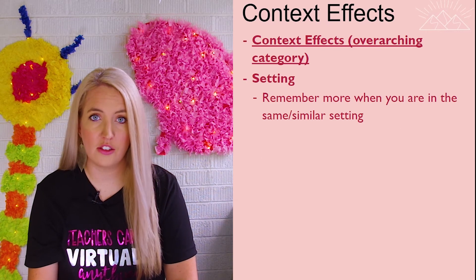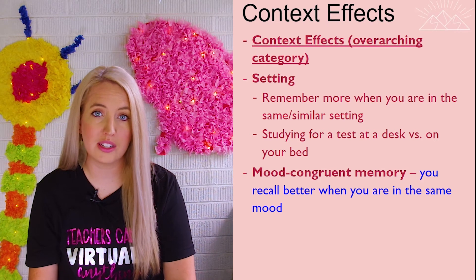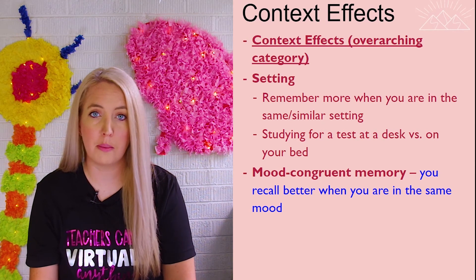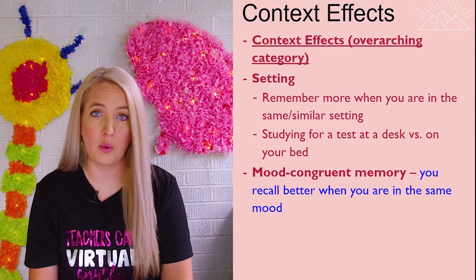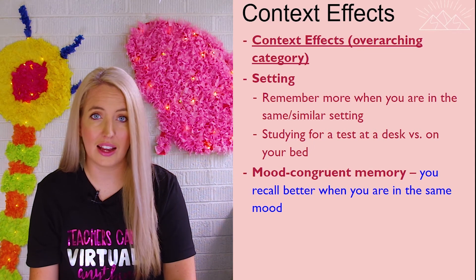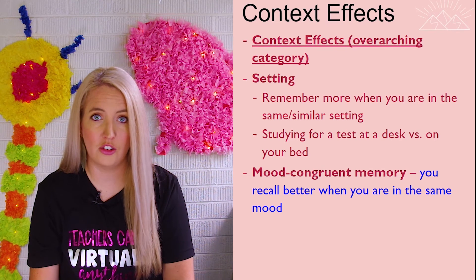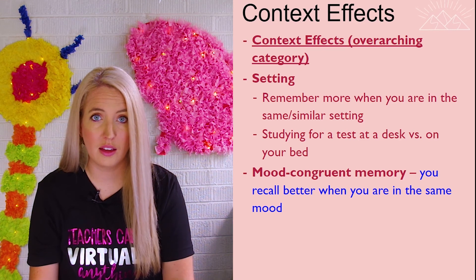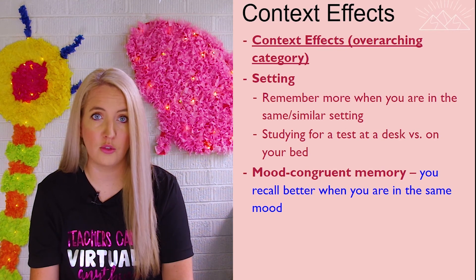Mood congruent memory is another type of context effect that looks at the emotional state we're in. We're more likely to remember information when we're in the same emotional state as when that information was first encoded into our memory. When we're having a bad day, we're more likely to remember all of the other bad days we've experienced. When we're in a good mood, we're more likely to remember all of the happier times in our life. In an academic setting, if we were calm when we learned the information but stressed out when taking an assessment, it might actually hinder the retrieval of that information. That's why testing anxiety is a real thing — when you are very nervous or worried about an assessment, it can actually block the retrieval of information from your long-term memory.